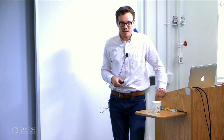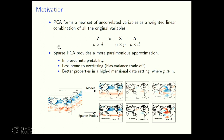PCA is probably the most important and most widely used dimensionality reduction technique in data science. This is mainly because it's very simple. The aim is to find a new set of uncorrelated variables which account for most of the variability in the data. We do this by forming a weighted linear combination of the original variables.